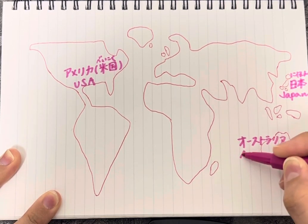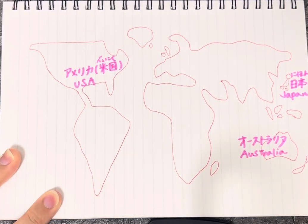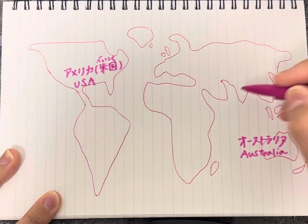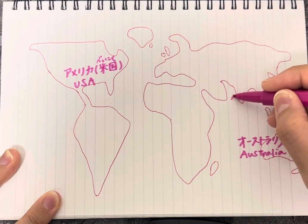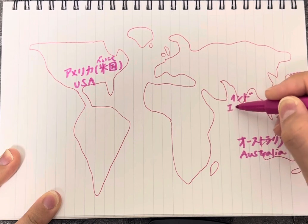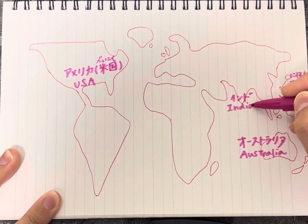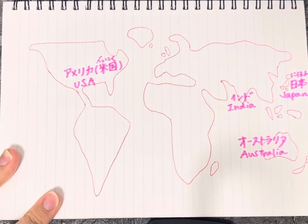This is Australia, which is Ōsutoraria. And India, which is Indo.